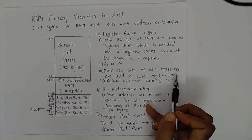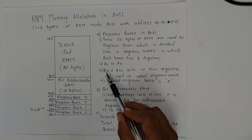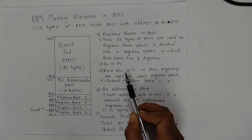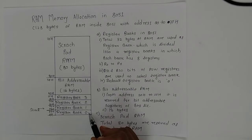When both RS1 and RS0 are 0, then register bank 0 is selected. When RS1 is 0 and RS0 is 1, that is 01, then register bank 1 is selected.